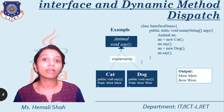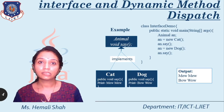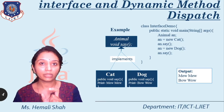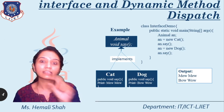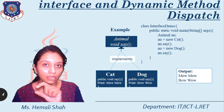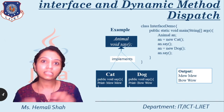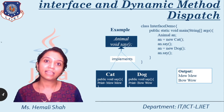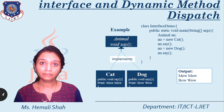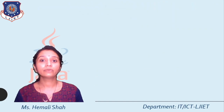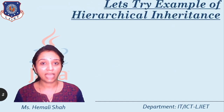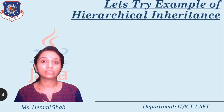This is basically runtime polymorphism. We are overriding the function of a superclass in the child class. The superclass only has the declaration and the child class has the definition. This is the concept of overriding. Now let's try to code this hierarchical inheritance.